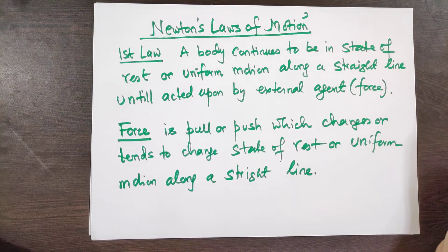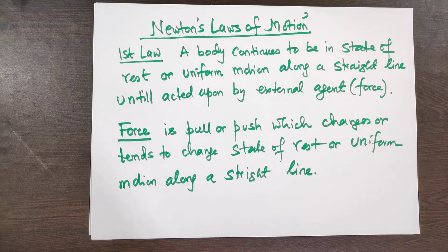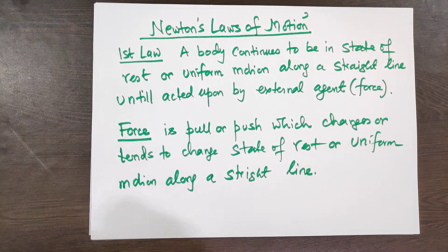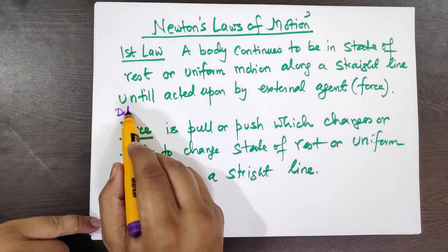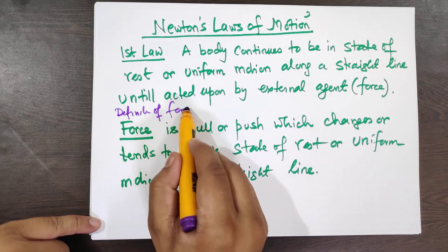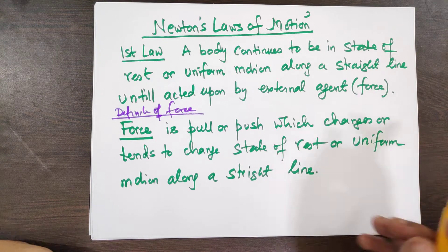We are discussing Newton's laws of motion. The first law says that a body continues to be in a state of rest or uniform motion in a straight line until acted upon by an external agent, that is known as a force. So Newton's first law gives us a qualitative definition of force. A force is a pull or a push which changes or tends to change the state of rest or uniform motion along a straight line of the body.